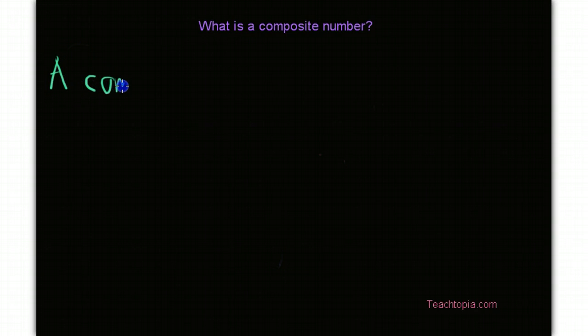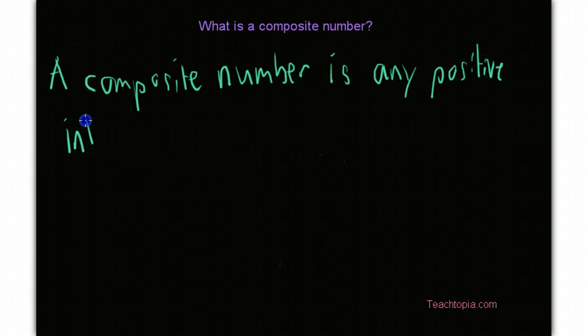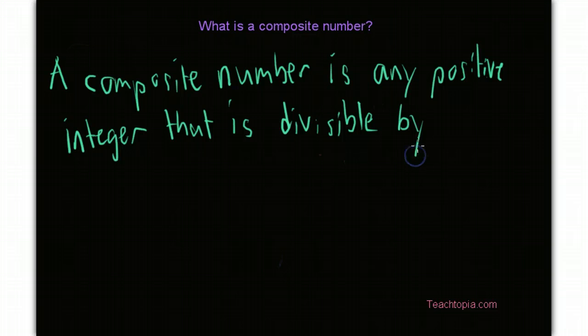A composite number is any positive integer that is divisible by more than just one and itself.